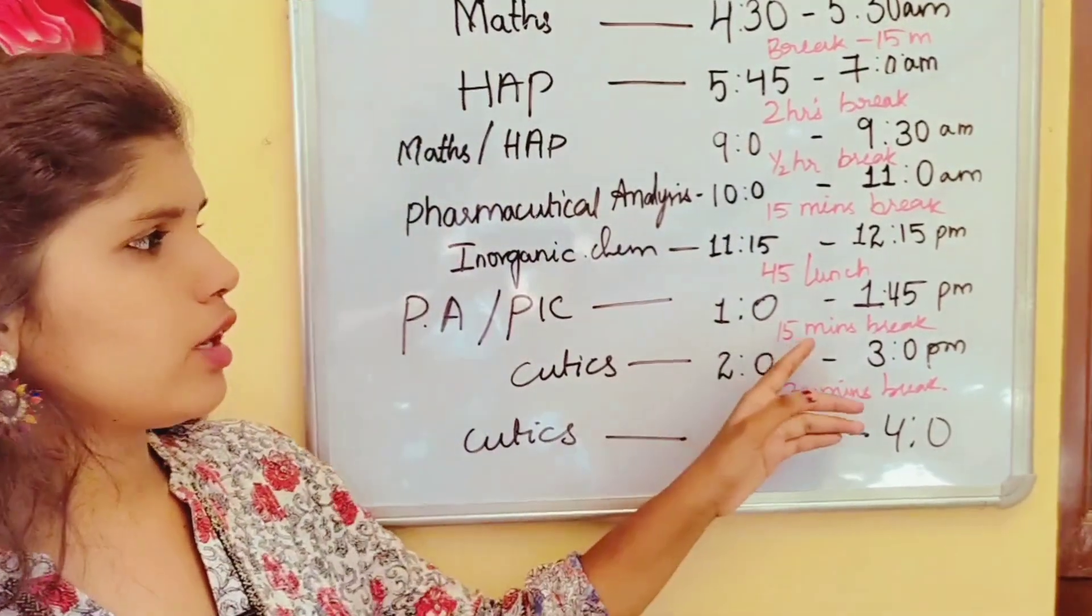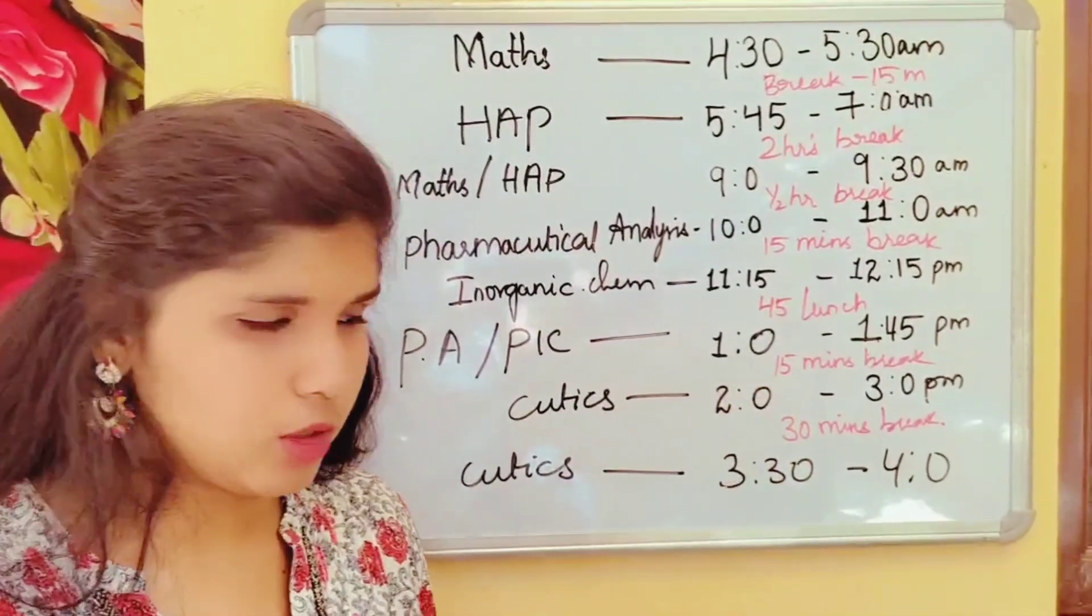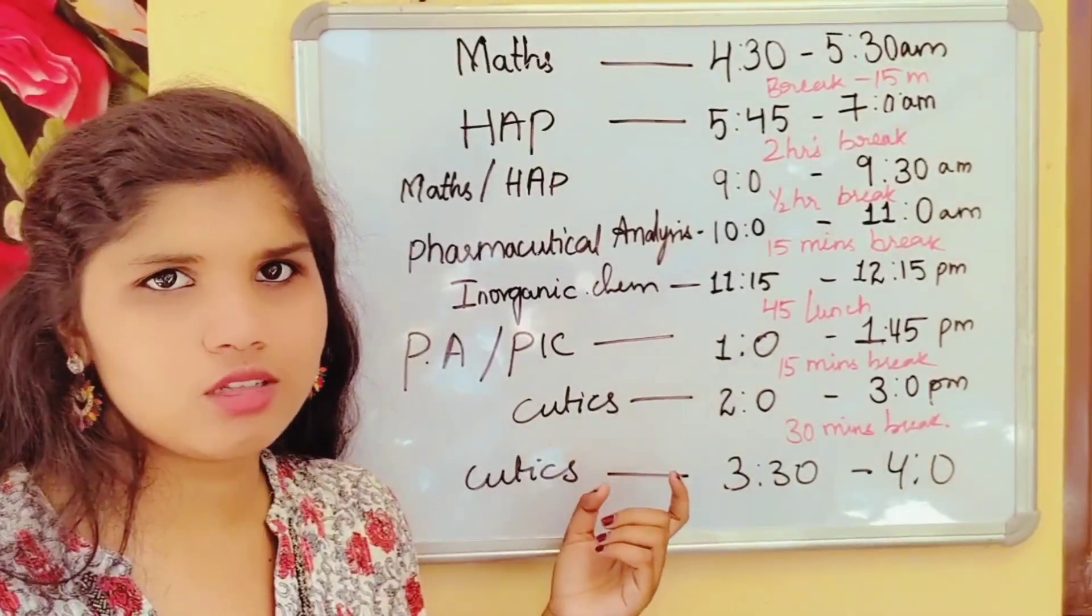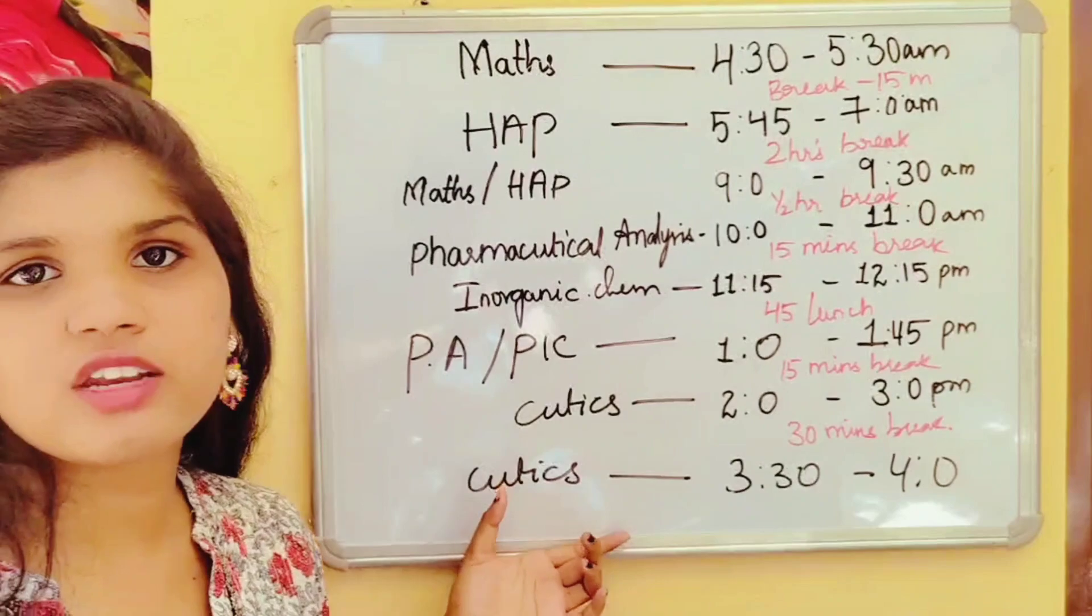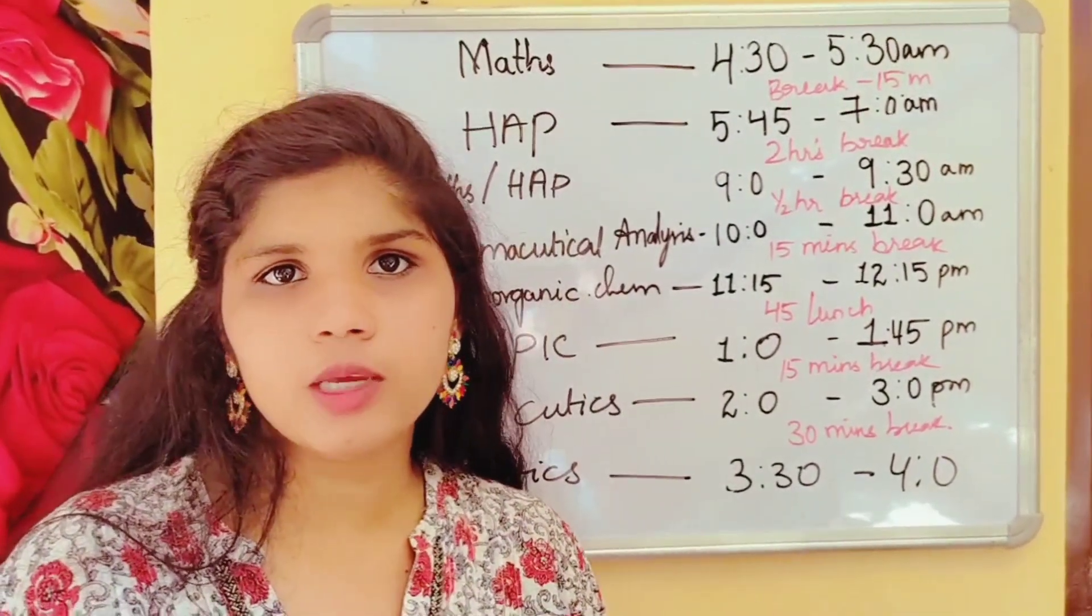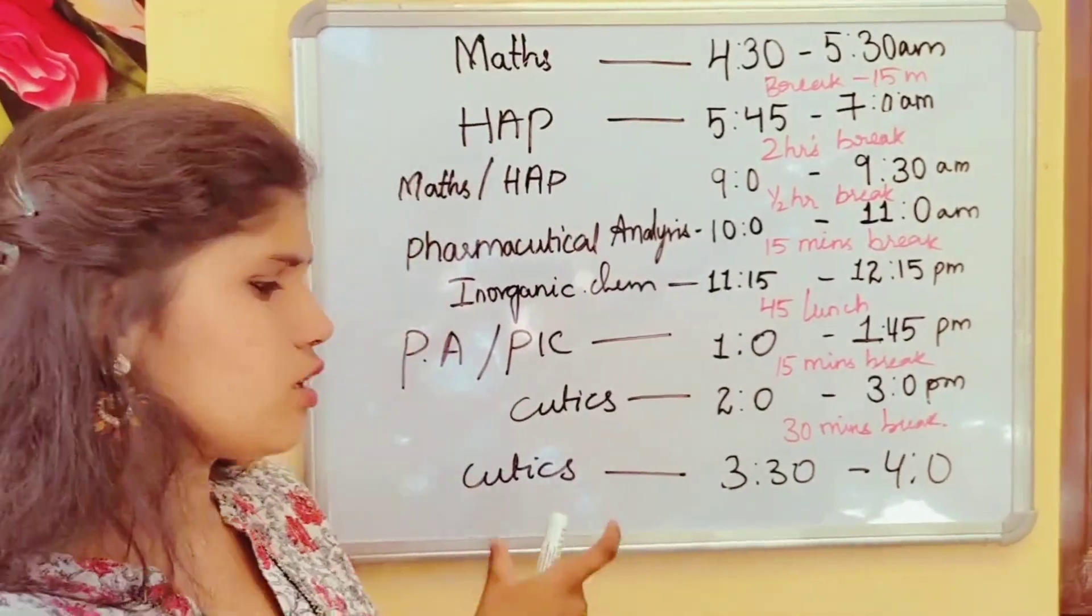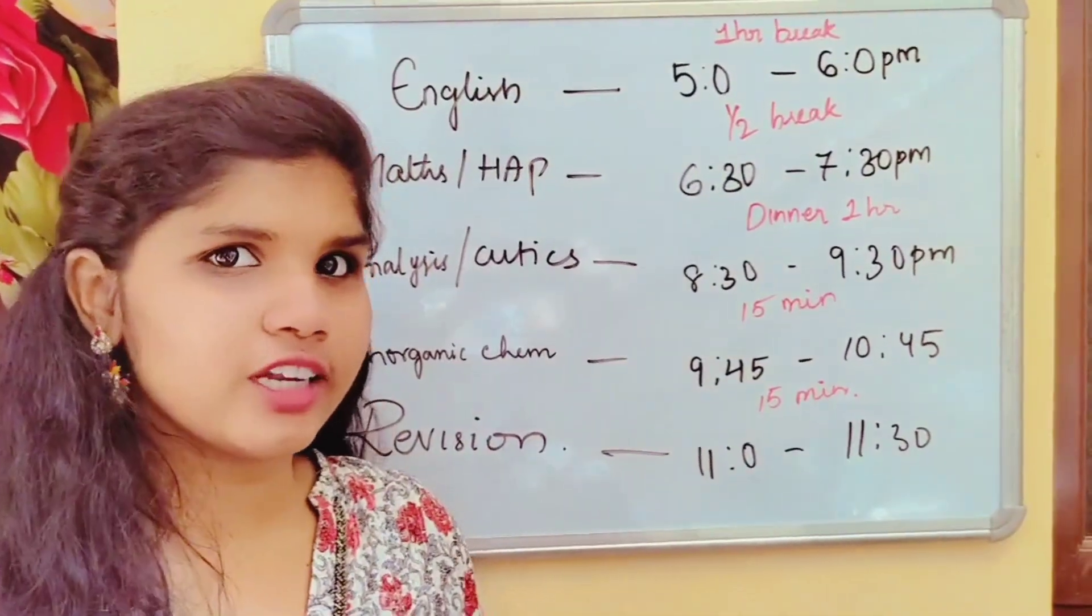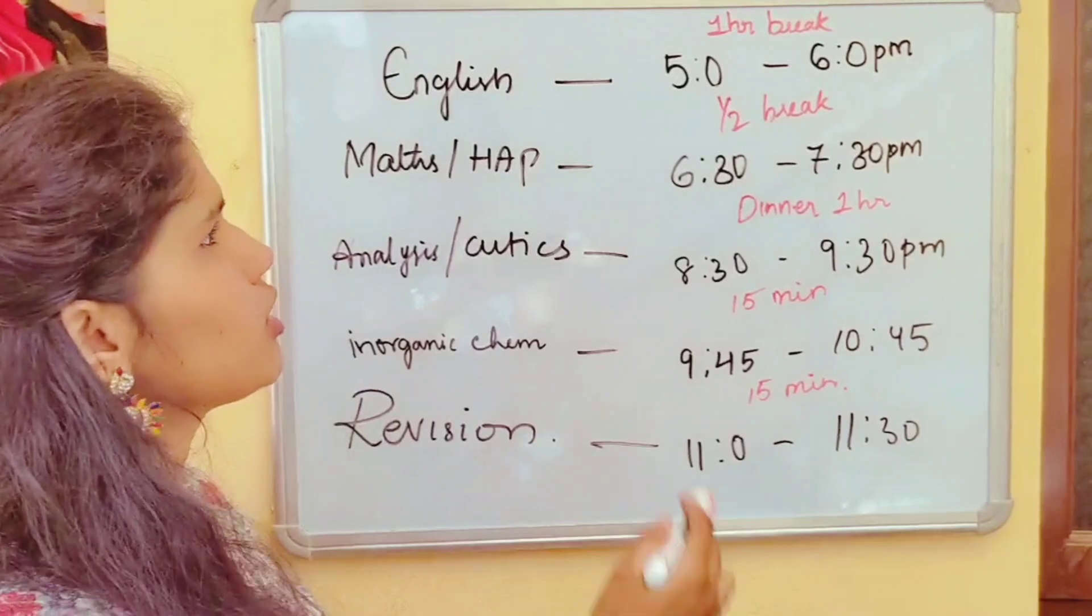So 1 to 1:45 work revision period, then 15 minutes break. Then 2 o'clock to 3 o'clock work pharmaceuticals, and then half an hour break. Then cubics revisions, so 5 subjects and English subject. 3:30 to 4 o'clock. Then we have one hour gap, then we have English.